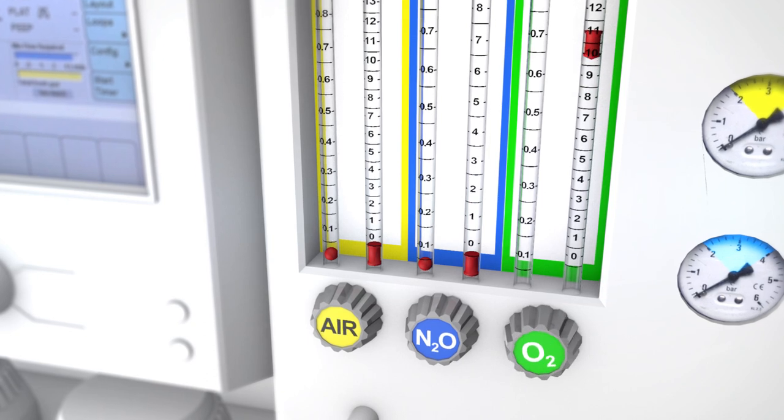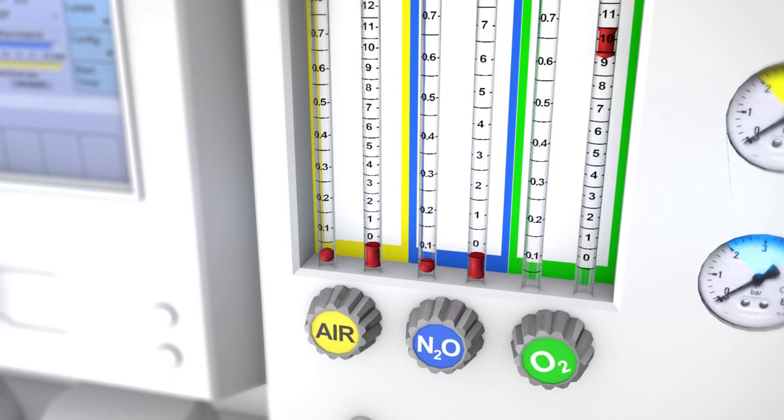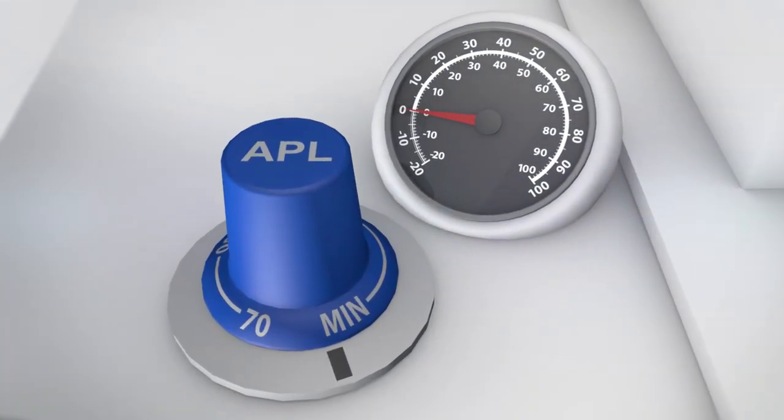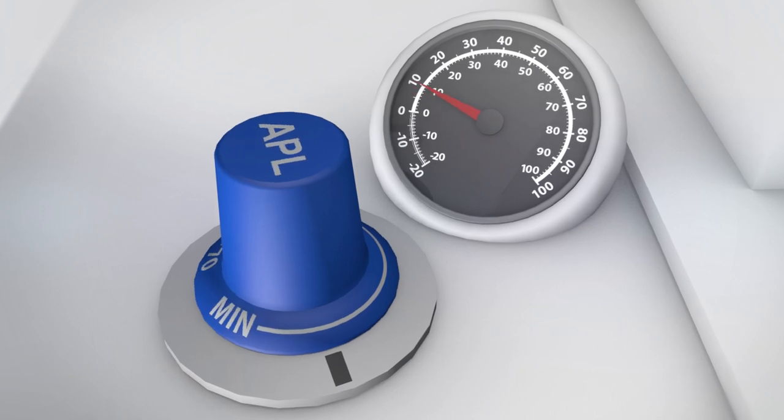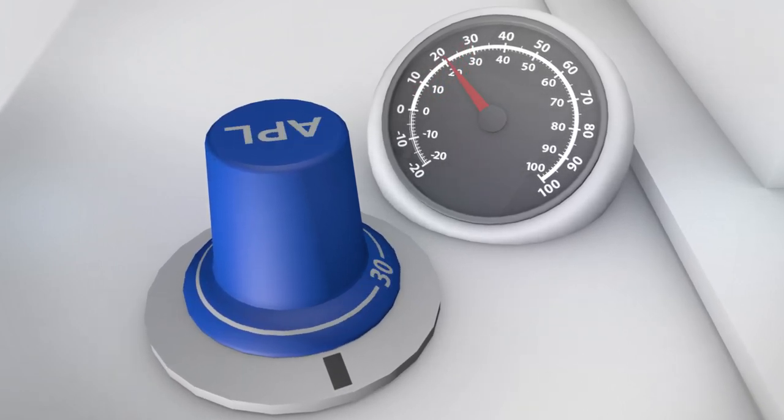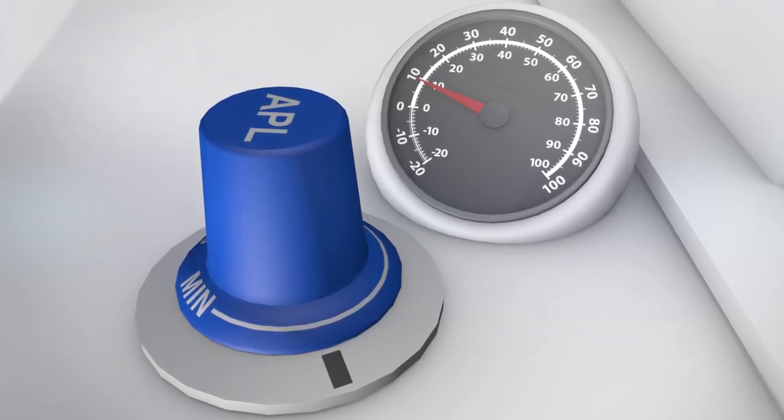Initially, high fresh gas flows are necessary to quickly fill the reservoir bag and allow for positive pressure generation. Use the adjustable pressure limiting valve to limit and set the amount of pressure buildup that occurs. Titrate fresh gas flows and the adjustable pressure limiting valve settings as needed to maintain upper airway patency and allow for ventilatory support.